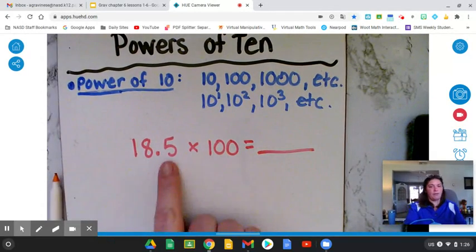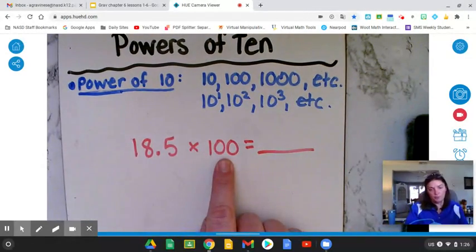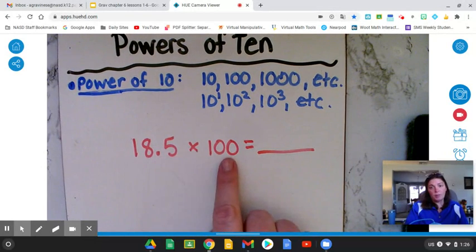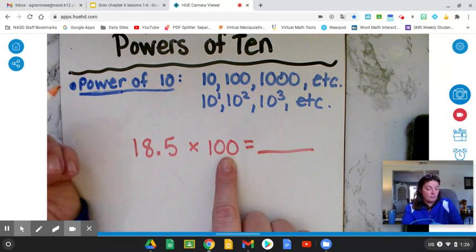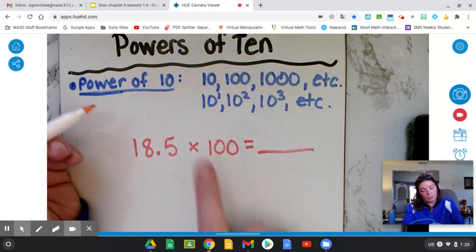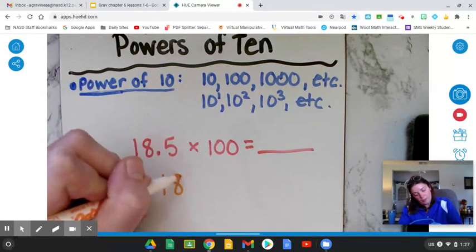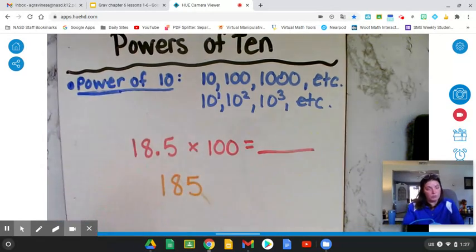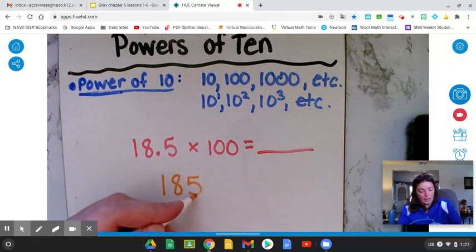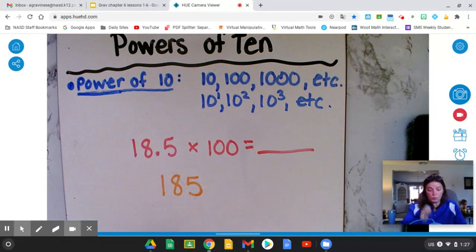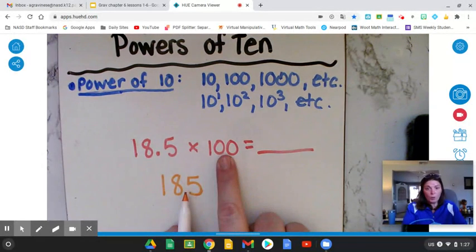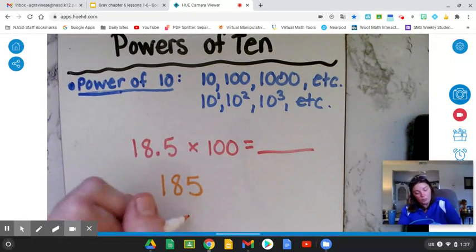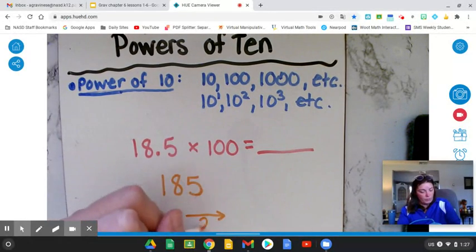Let's do another one. 18.5 times 100. I'm multiplying this decimal number by a power of 10. So I know I can move my decimal point. I can move it to the right because it's multiplication. So let's rewrite our number. And I am moving my decimal point to the right. Its original location was between the 8 and the 5. When I count my zeros in my power of 10, there are 2. So I know I'm moving it to the right two times.